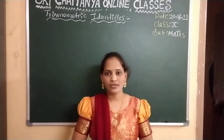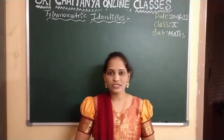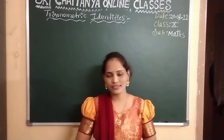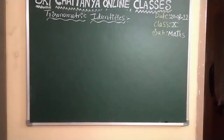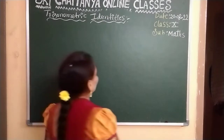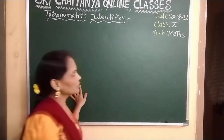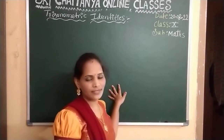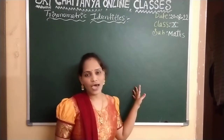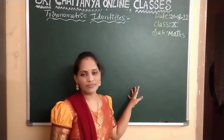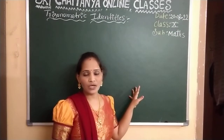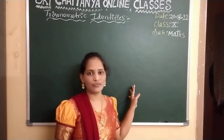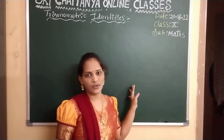Now I am going to derive these trigonometric identities. Before going to derive, first you should know what is an identity. Identity is a mathematical equation which is true for all the values of it.